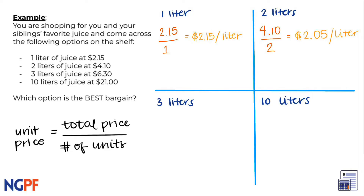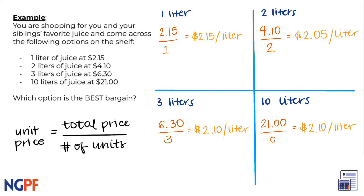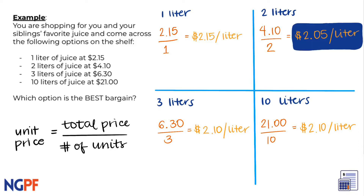Now try solving for the unit price for the packages of 3 and 10 liters of juice. Great work on those calculations. So now that we have all four options' unit prices, which option provides the best bargain? We see that the two liters is the best bargain of these options because it's the least expensive per unit.